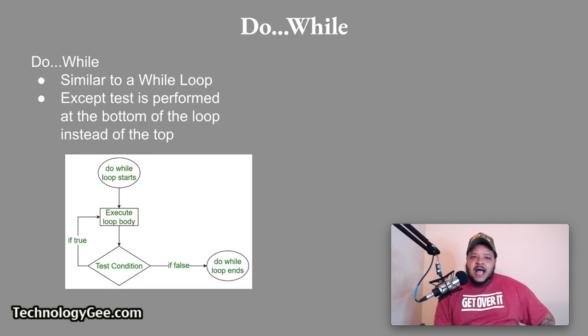And we have a do while loop. A do while loop is similar to a while loop, except that the test is performed at the bottom of the loop instead of at the top. So you got the do while loop. It starts. It starts executing what it's supposed to execute. Then it tests the condition. And if the condition is false, the loop will end. If it's true, it'll keep going around and around until somehow that test condition turns out to be false.